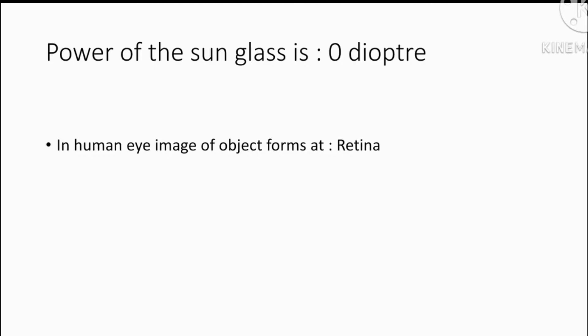In human eye, image of object forms at. Where is the image of objects? The correct answer is retina.